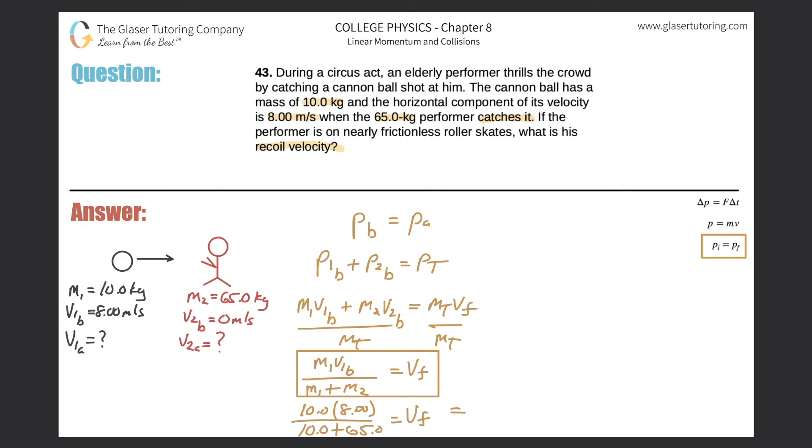So let's just plug it in. We get 10 times 8 divided by parentheses, 10 plus 65. And we get a value of 1.07. So 1.07, and that is in meters per second. That is the final velocity of the total system. It's also the final velocity of just the performer, and it could also represent the final velocity of that cannonball.